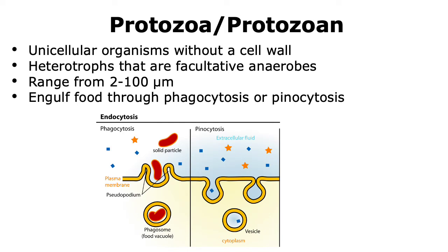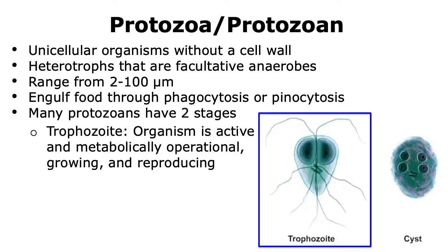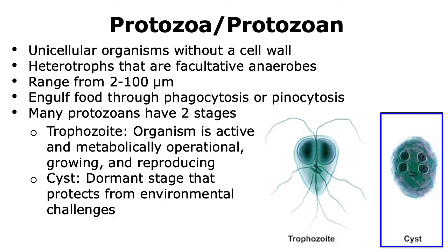They engulf food through the process of phagocytosis or pinocytosis. When we look at the stages of protozoans, some of them can have two stages. One stage is called the trophozoite, and in this case the protozoan is active and metabolically operational — it can grow and reproduce. However, there is another stage, which is the cyst stage, and in this case the protozoan is dormant and able to protect itself from environmental challenges.